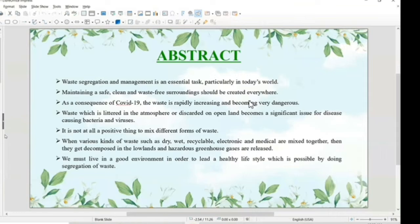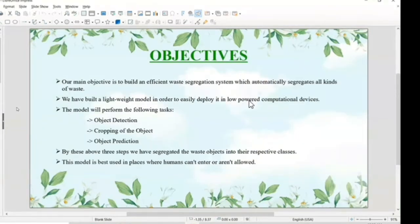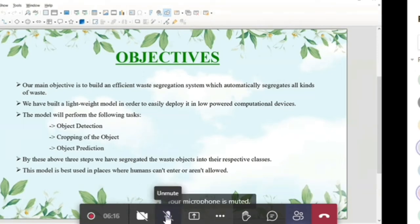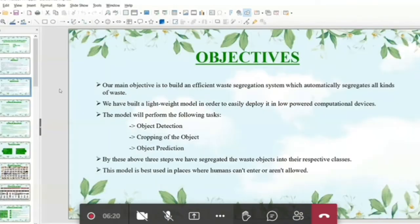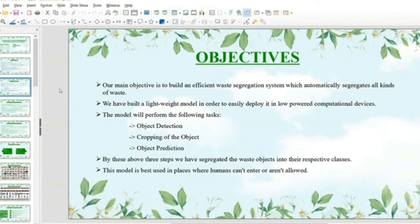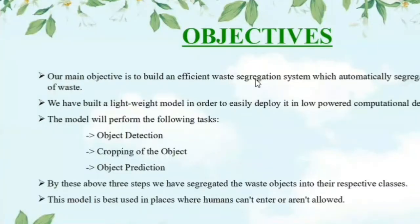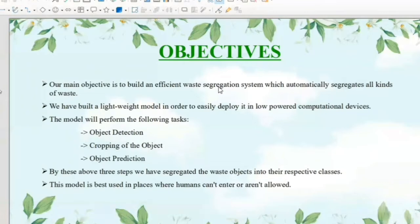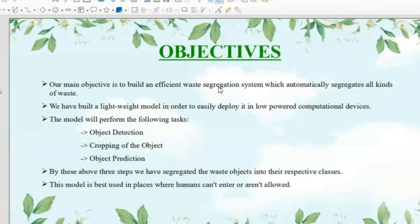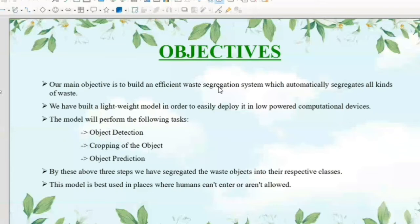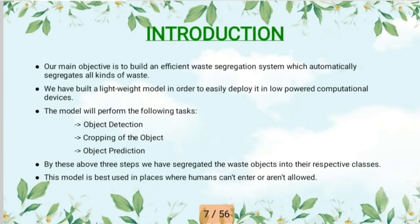In order to lead a healthy lifestyle, we shouldn't mix all kinds of waste, and hence we have designed this waste segregation system. Our main objective is to build an efficient waste segregation system which will automatically segregate all types of waste. We made our model very lightweight and fast with good accuracy so it can be deployed on low-powered computational devices and mobile applications. We have three steps: object detection, cropping to isolate the object, and predicting which item it is — displaying the label and confidence score — to segregate objects into their respective classes.